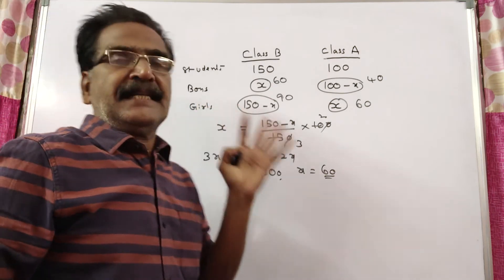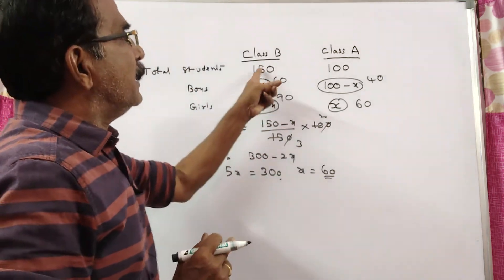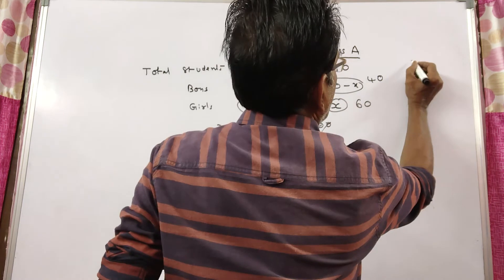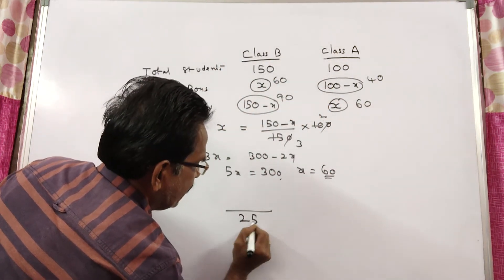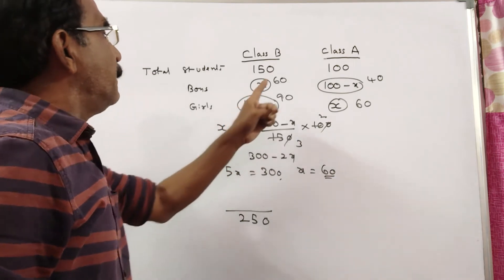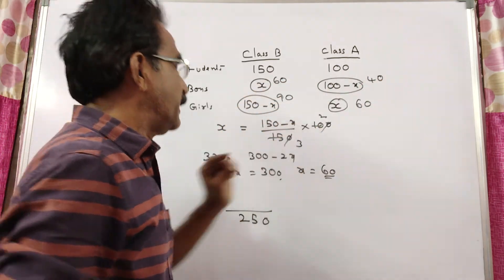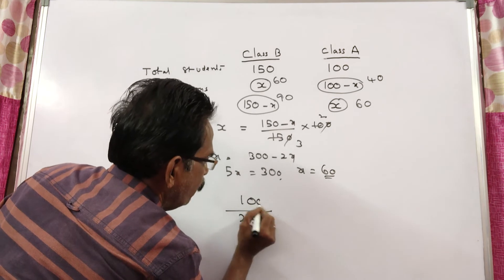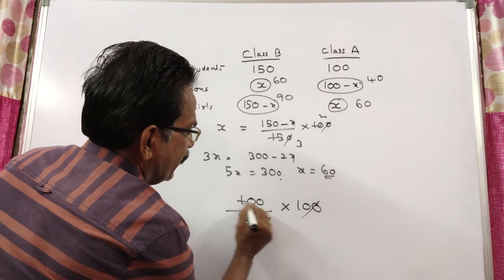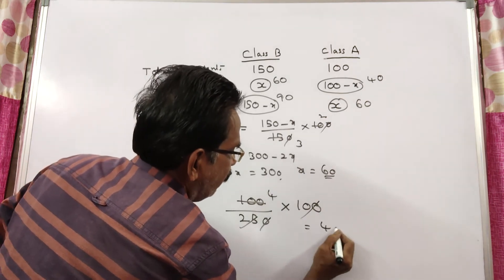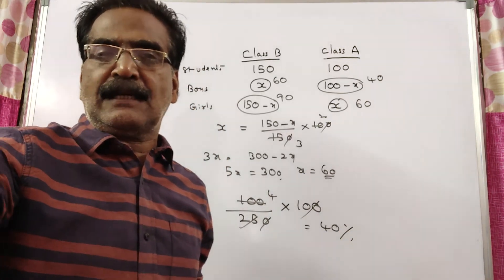Now the question is the percentage of boys out of the total number of students. Total number of students is 150 plus 100 equals 250. Total boys is 60 plus 40 equals 100. So the percentage of boys out of total students is 100 over 250 into 100, which equals 40%.